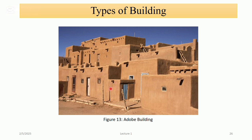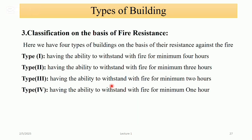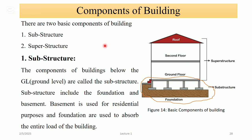Classification on the basis of fire resistance: here we have four types of buildings. Type 1 has the ability to withstand fire for a minimum of 4 hours. Type 2 has a minimum 3-hour fire resistance. Type 3 has the ability to withstand fire for a minimum of 2 hours. Type 4 has the ability to withstand fire for a minimum of 1 hour.